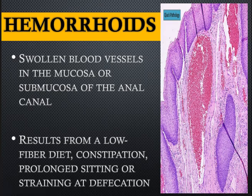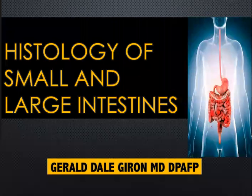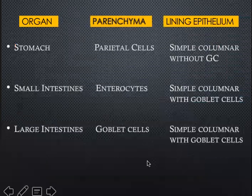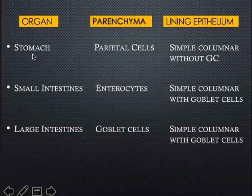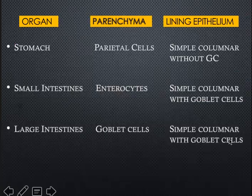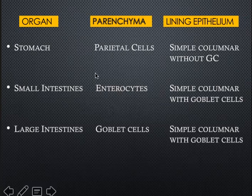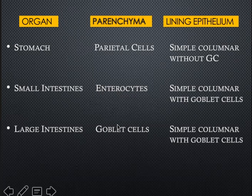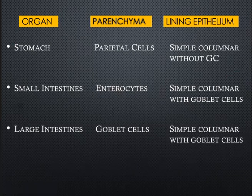That ends the histology of the small and large intestine. The summary table shows the organ, parenchyma, and lining epithelium: the small and large intestine share the same lining epithelium — simple columnar with goblet cells. The parenchyma of the small intestine is the enterocyte or tall absorptive columnar cell, while the parenchyma of the large intestine is the goblet cell. Thank you for listening, and good luck on your examination.